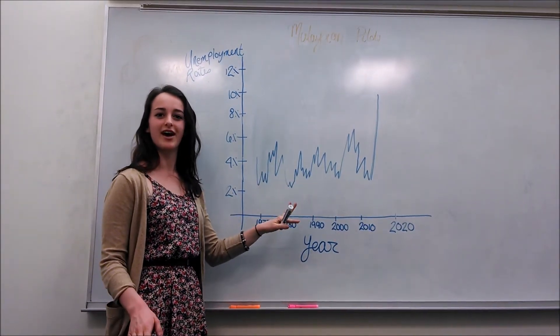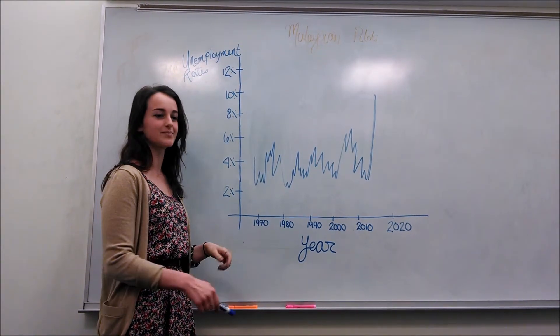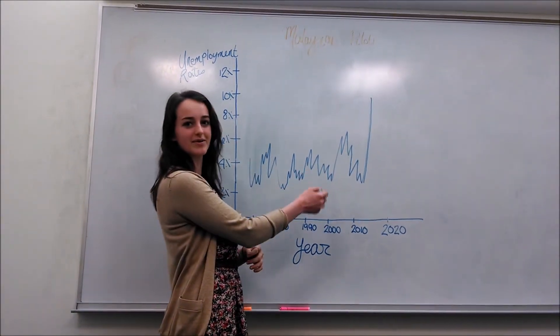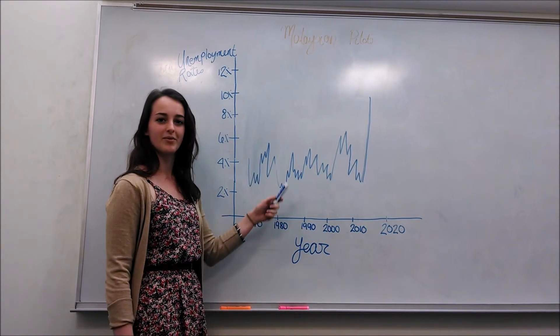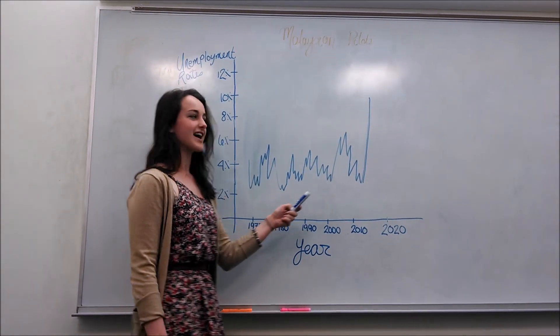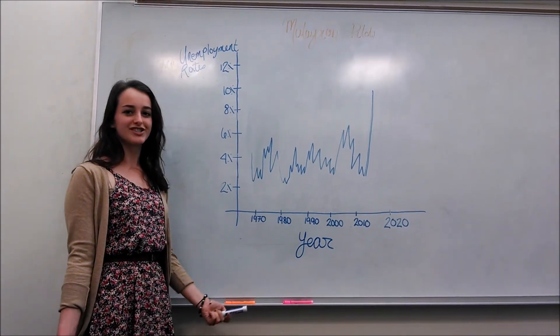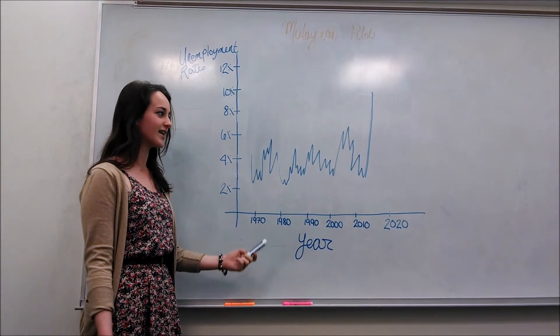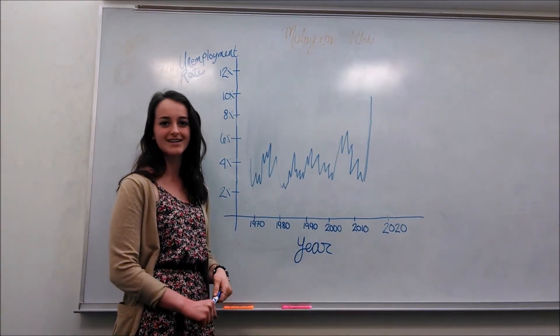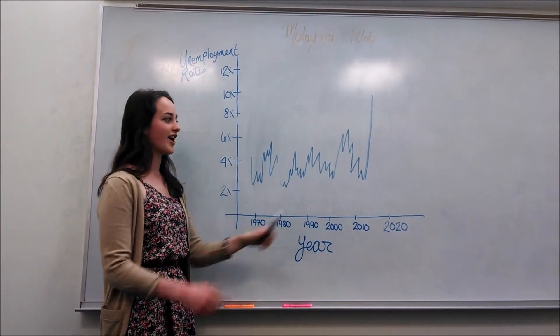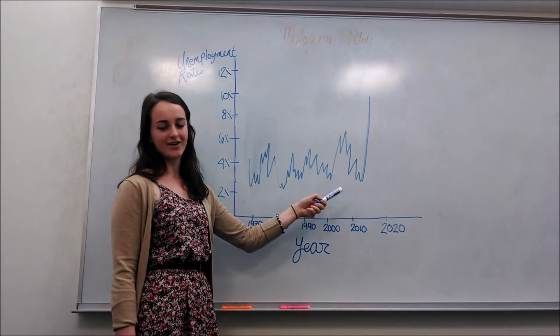Right now they're experiencing cyclical unemployment, which means that as the business cycle just randomly goes up and down, so does the unemployment rate with that cycle. Right now, people are just too scared to fly. They don't want to take any flights from Malaysian pilots, which means that they are unemployed and currently waiting for more jobs.